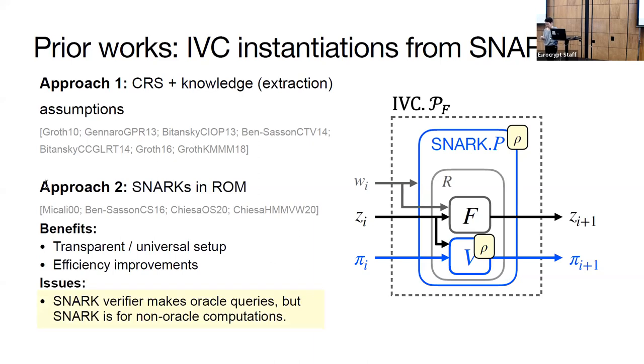In this paper, we focus on SNARKs in the random oracle model because we get properties such as transparent or universal setup. We also get efficiency improvements from avoiding expensive algebra. However, when constructing IVC, SNARKs in the random oracle model have the following issue. Both the prover and the verifier access the oracle, but the SNARK is built for verifying the correctness of non-oracle computations. This is a problem because the prover needs to prove that the verifier accepts, but the verifier makes oracle queries. It's unclear how to do this.